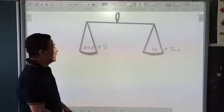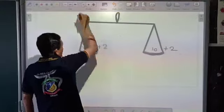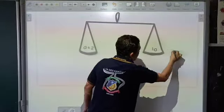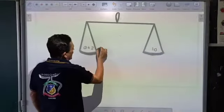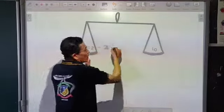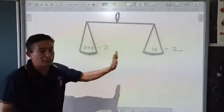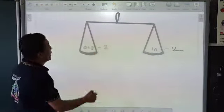Similarly, I may remove, let's say, instead of plus 2, I want to remove something from here. So I write minus 2 here. That means on the other side I also have to subtract, so that the two sides become equal.